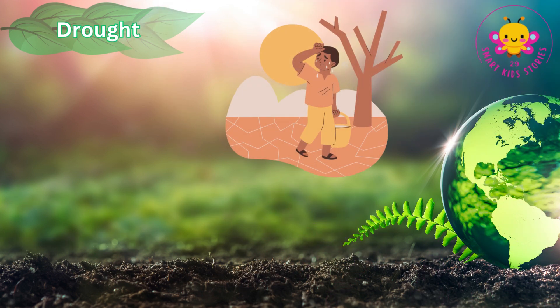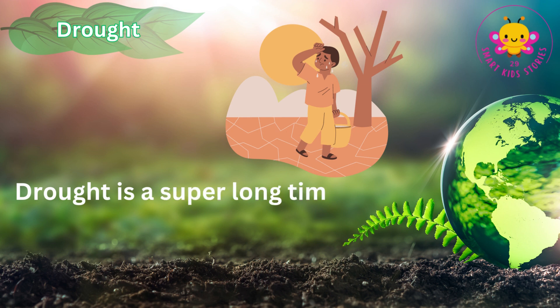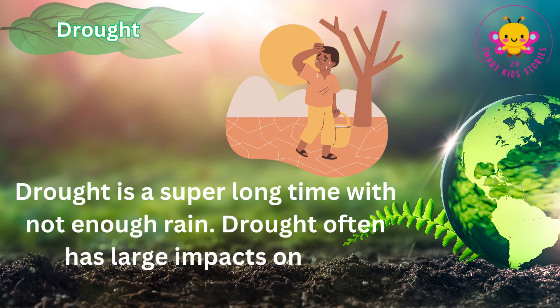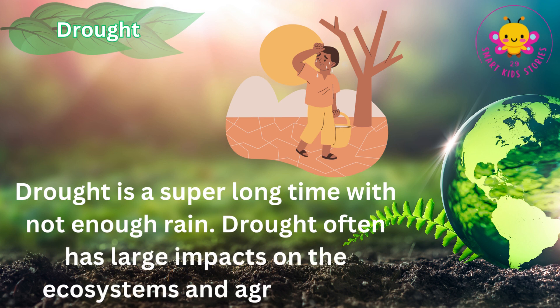Drought. Drought is a super long time with not enough rain. Drought often has large impacts on the ecosystems and agriculture.